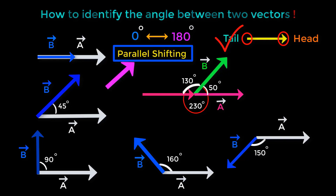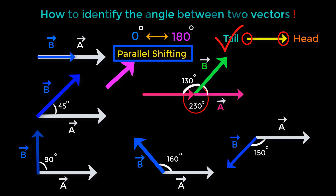Now let's understand parallel shifting. Parallel shifting means changing the position of a vector from one place to another without changing its direction and magnitude. That means we can shift any vector anywhere without changing its direction and magnitude.